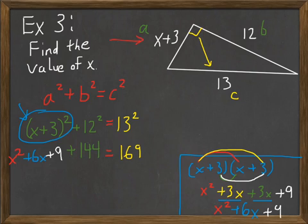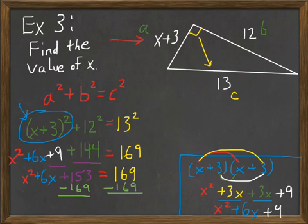Now that I've got that, I need to solve for X. This is a quadratic equation. So I need to get all terms on one side and leave 0 on the other. I can combine those like terms, plus 9 and plus 144, to get plus 153. In order to get 0 on one side, I need to subtract the 169. I'll subtract it on the left side as well. I'll have X squared plus 6X minus 16 equals 0.